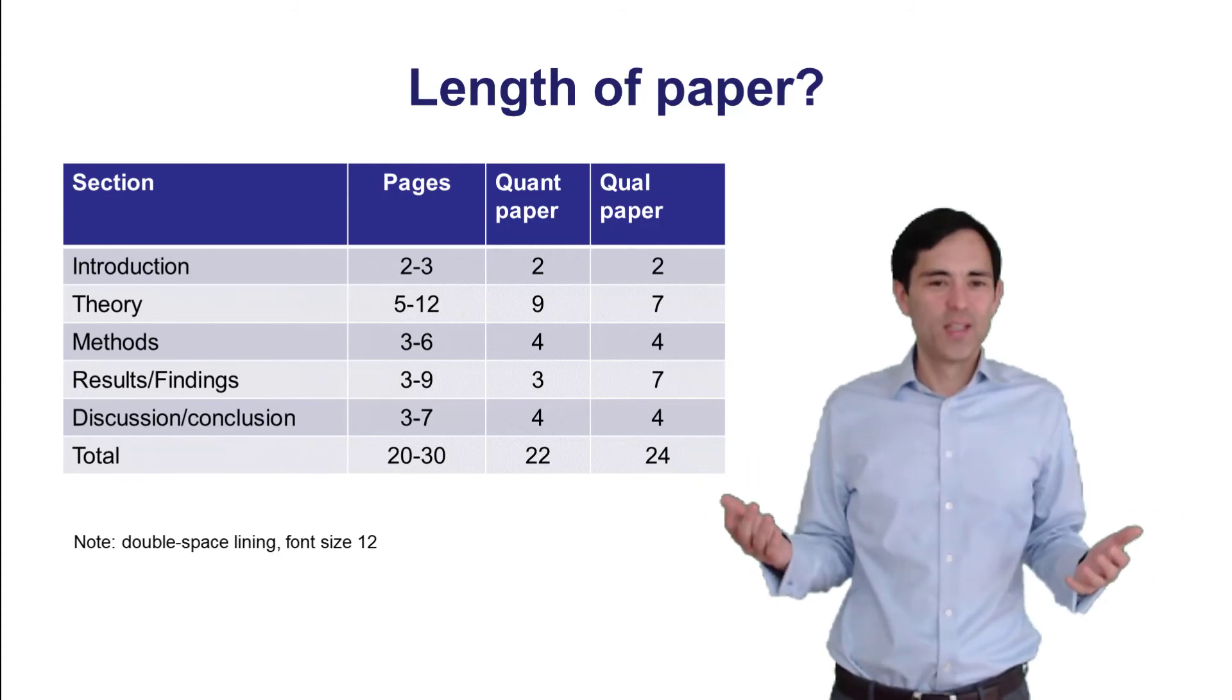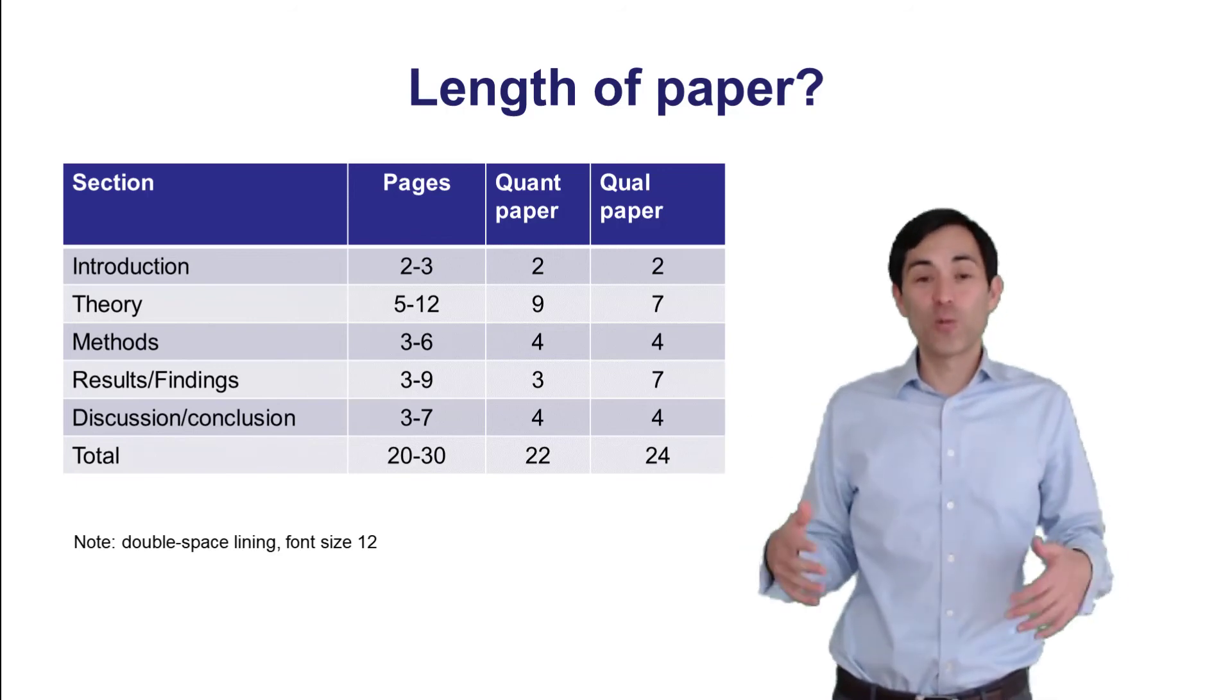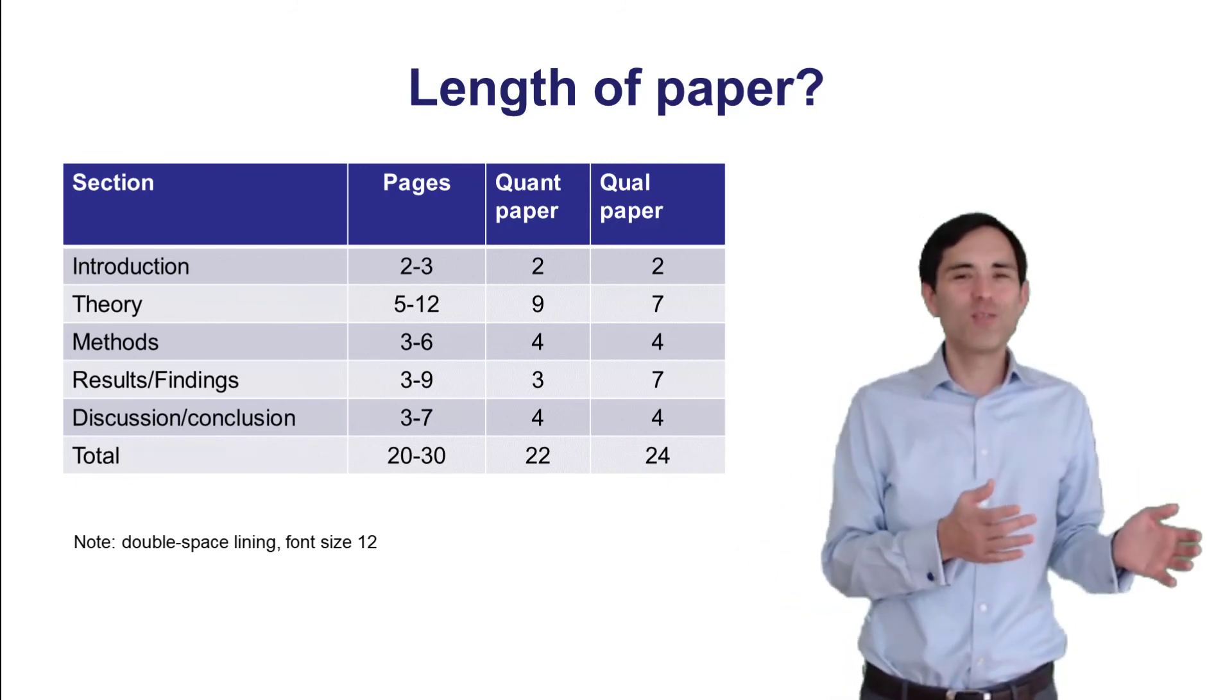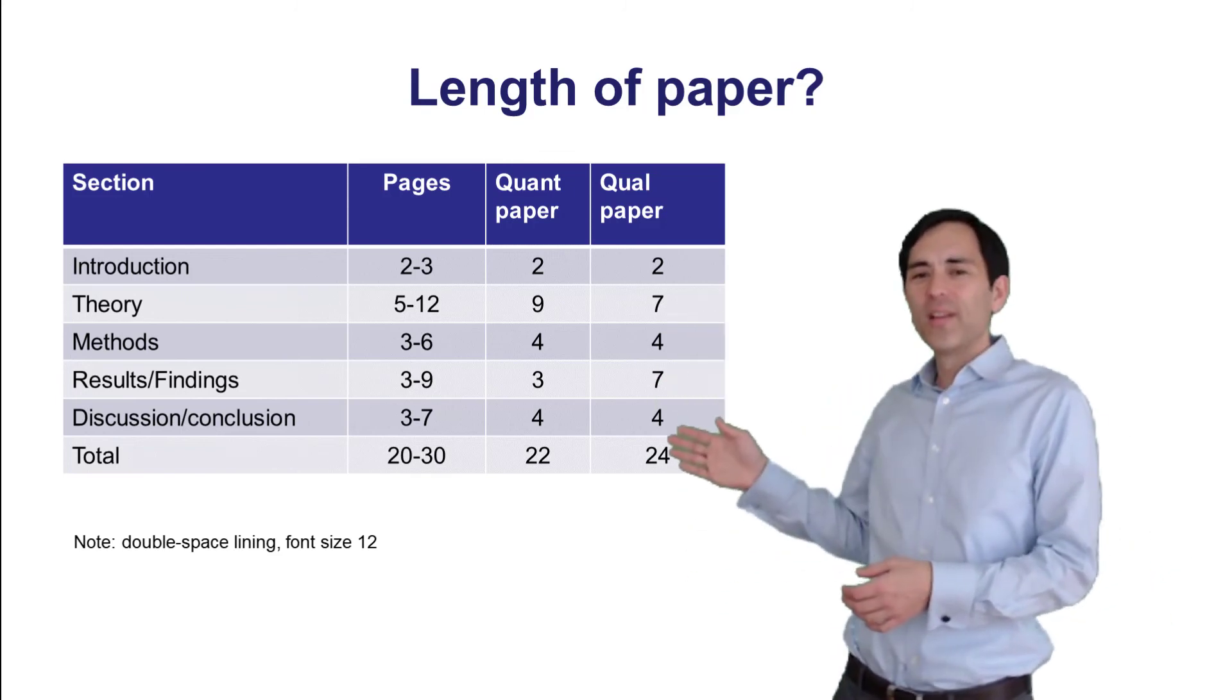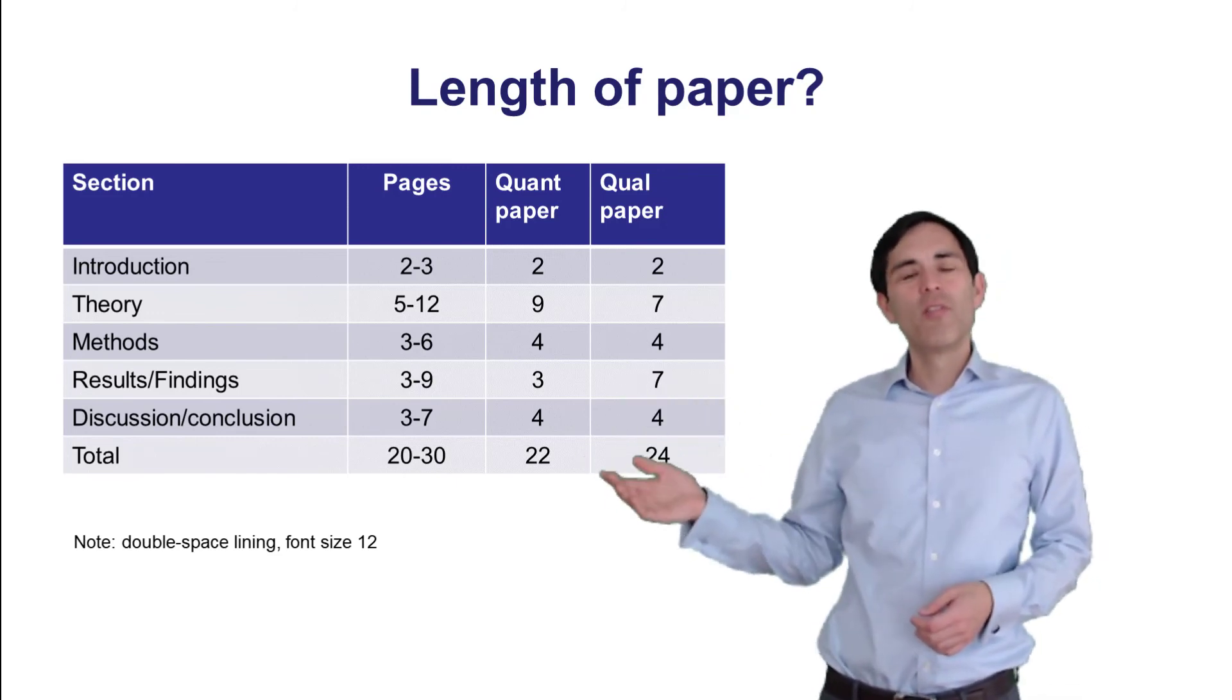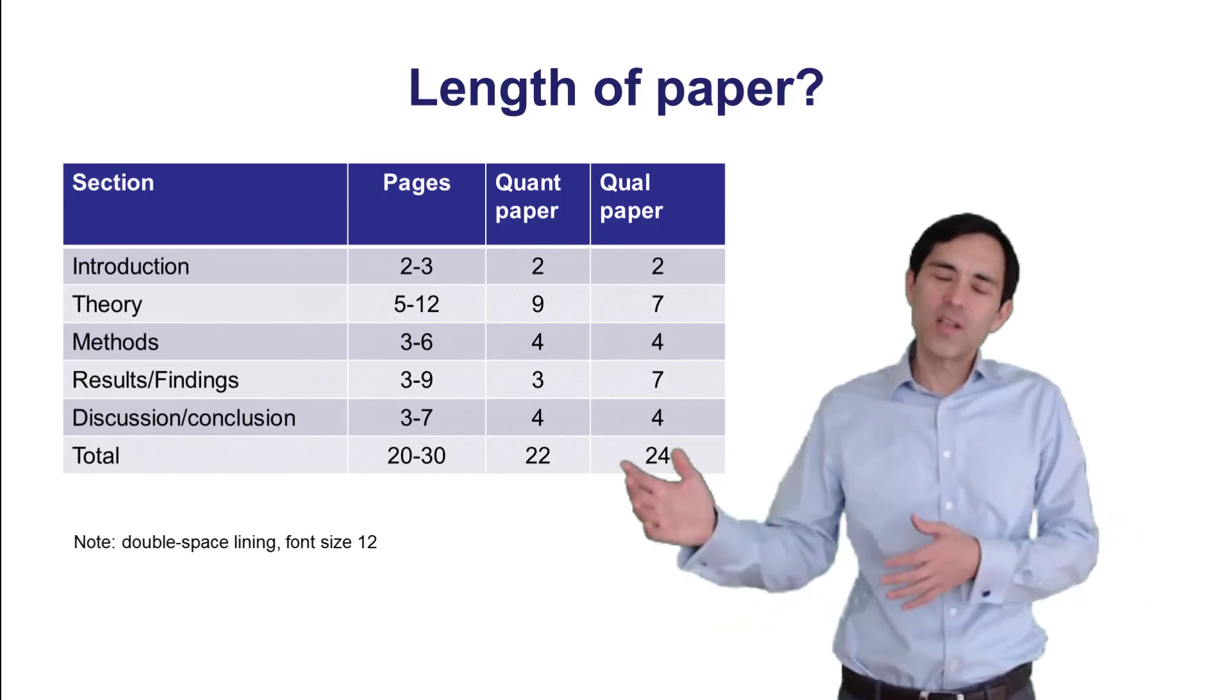Then, you would report your results and findings. In quantitative papers, it's fairly straightforward. Hypothesis 1, confirmed, not confirmed, and so forth. Qualitative papers, they live from these rich insights, from rich findings. So it's also fairly common that the finding section can be longer. Discussion and conclusion section is important for both a quantitative paper and a qualitative paper. So just as an example, maybe they're somewhat equally long, four pages. That would result in a quantitative paper in total, if you do the math, approximately 22 pages, and for a qualitative paper, maybe 24 pages. And that's also fairly common that qualitative papers tend to be a little longer, because they live from these rich descriptions and findings. And that makes these papers interesting. So there are some differences.